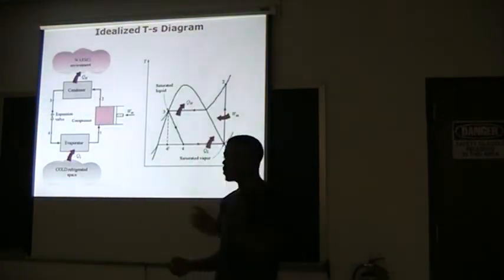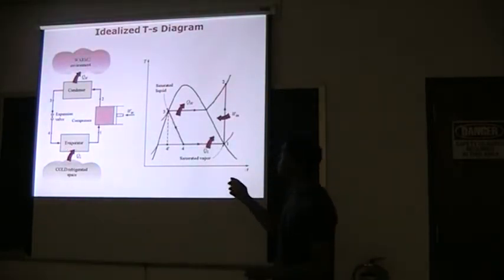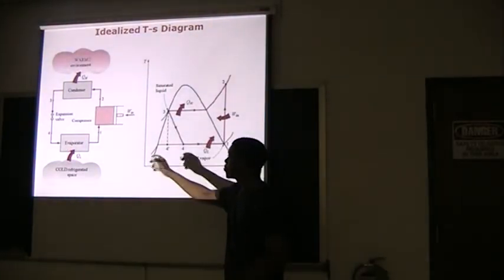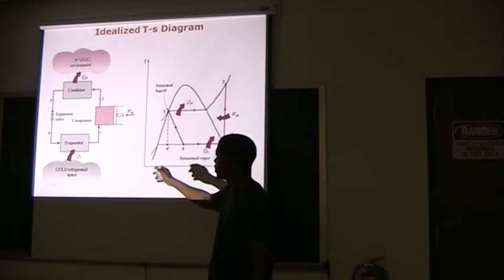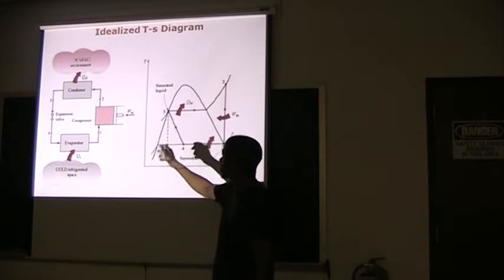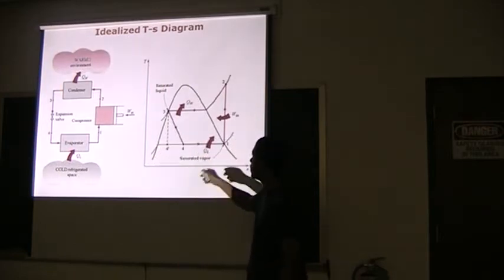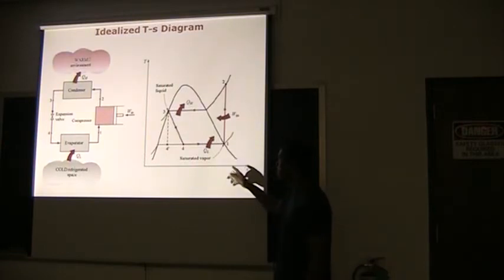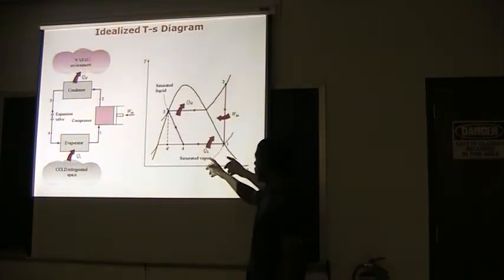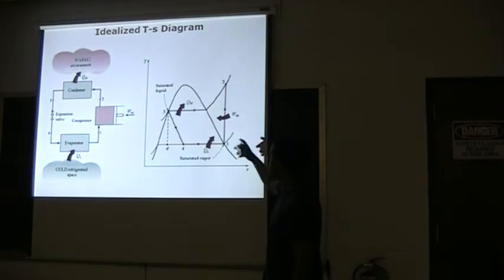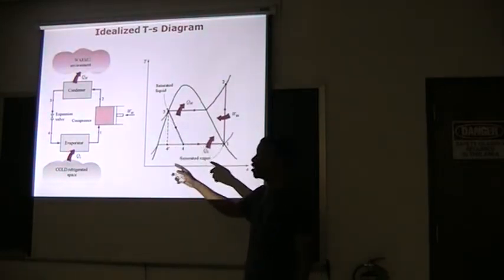Here's your idealized T-S diagram, and I show the process again, which is the evaporator, compressor, condenser, expansion. You can see your T-S diagram here. It shows that in one to two, you have your work in, your compressor, it does work.